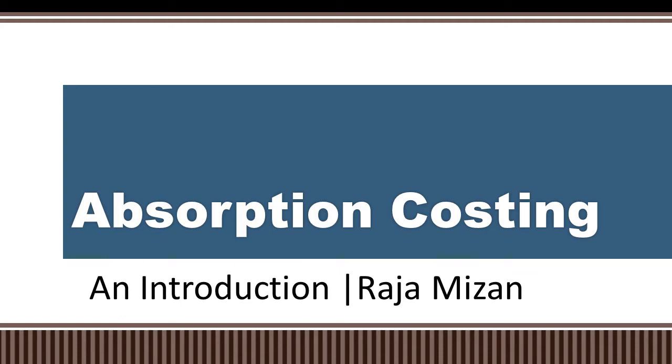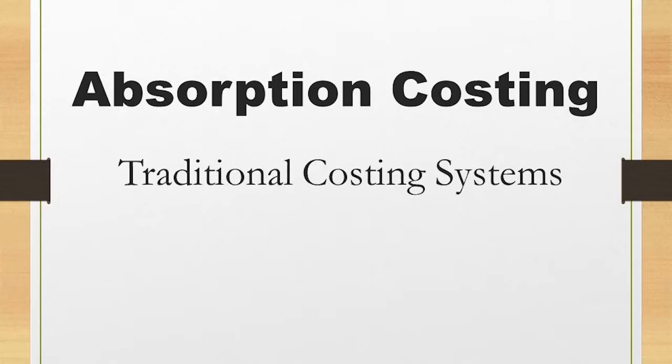This lecture is a continuation of our previous lecture where we started looking at costing. We talked about different types of cost, how we can categorize and differentiate them, and we discussed the main problem of costing which was overheads. Today's lecture is on a traditional absorption costing system, which was used massively in the industrial era and is directly relevant.